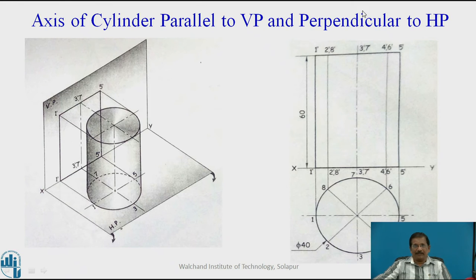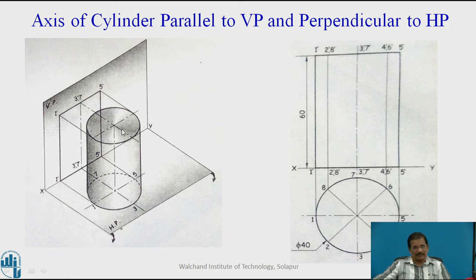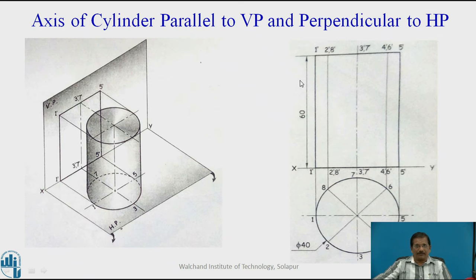Now, axis of a cylinder parallel to VP and perpendicular to HP. It is a cylinder placed on HP such that the axis is perpendicular to HP and parallel to VP. There are no slant lines — only the base is a circle and the top is also a circle, with no actual generators like a prism or pyramid. So while drawing, the top view will be a circle. We will draw a circle of 40 mm diameter. We need some generators projected upwards to get the front view, so we will divide the circle into 8 or 12 equal parts and name accordingly 1, 2, 3, 4, 5, 6, 7, 8.